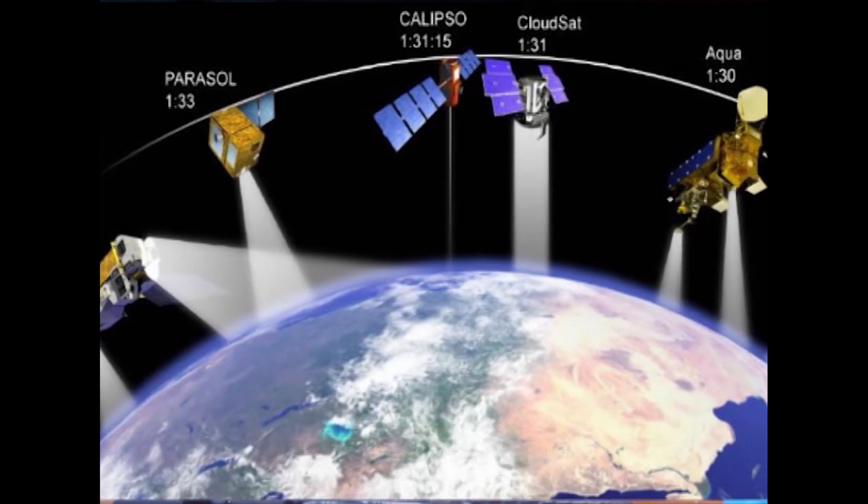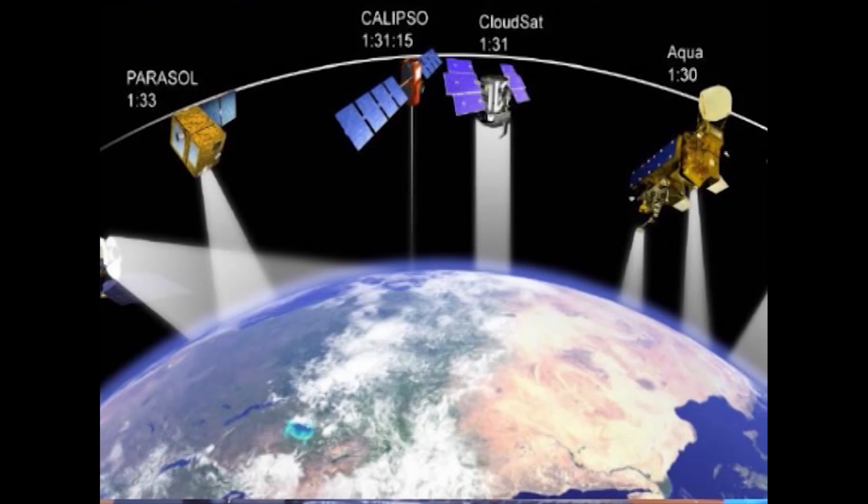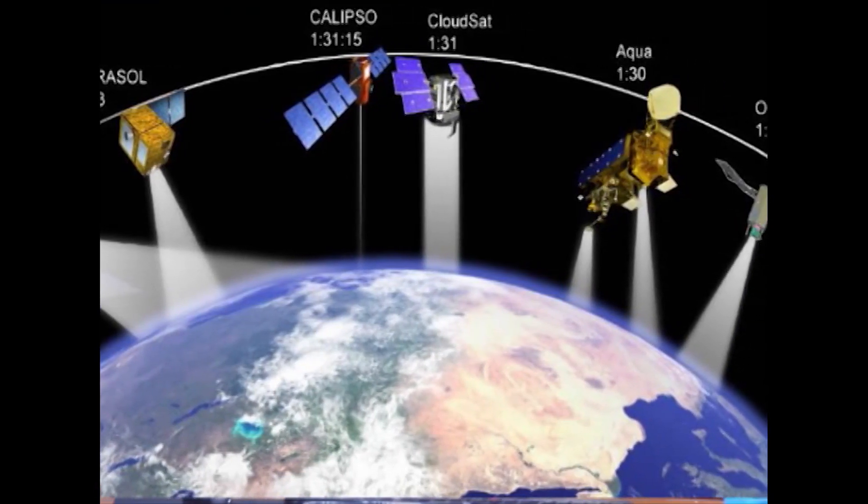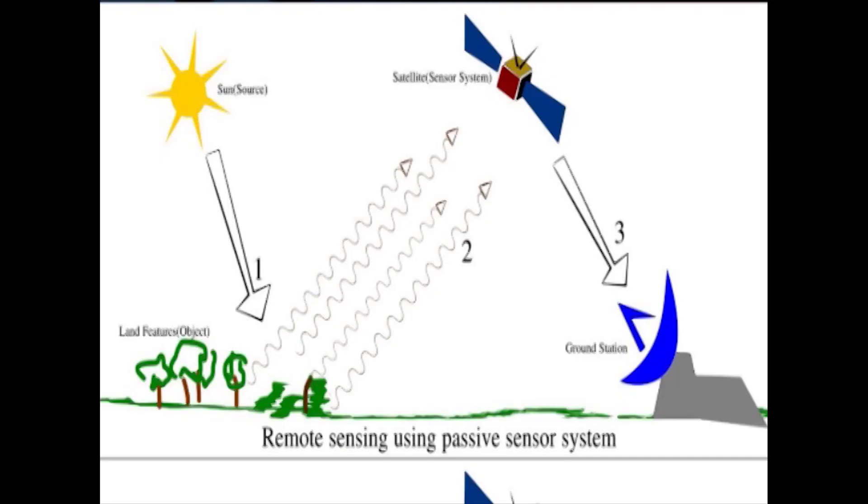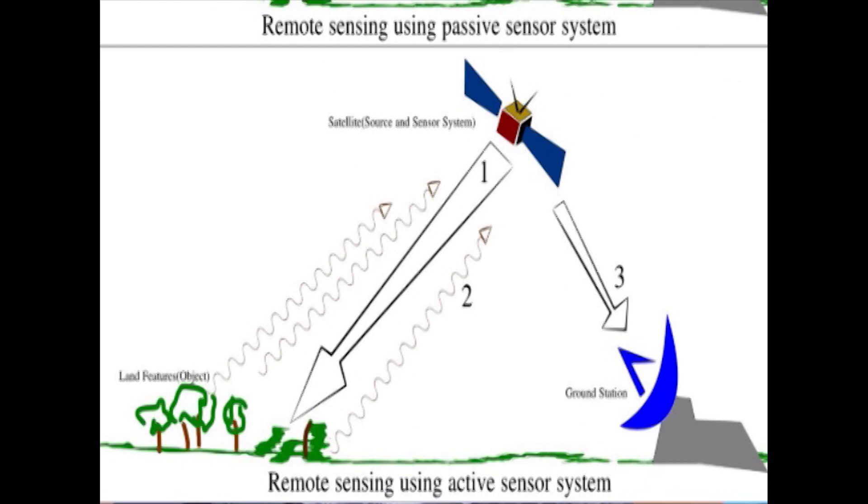Remote sensing is the science and art of acquiring information about material objects, areas or phenomena without coming into physical contact with the objects or area under investigation. Information transfer is accomplished by use of electromagnetic radiation. Each band of information collected from a remote sensing sensor contains important and unique data. Different wavelengths of incident energy are affected differently by each target — absorbed, reflected or transmitted in different proportions. Using information from different bands ensures that target identification or information extraction becomes fairly accurate.